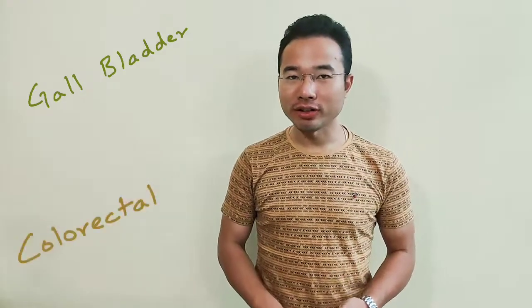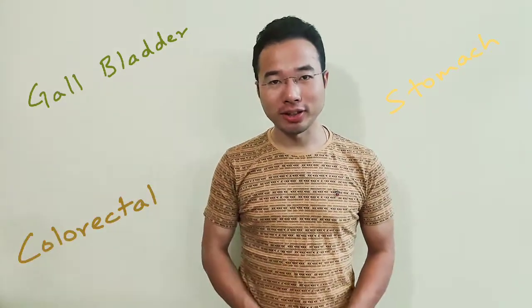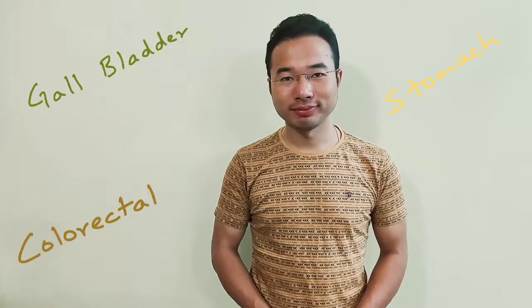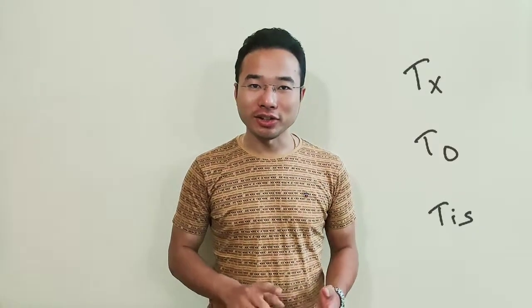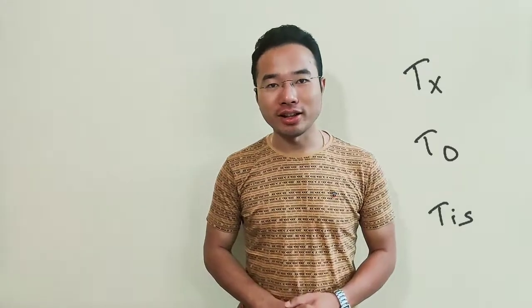In this video we're going to look at the TNM classification of three organs in the abdomen: the gallbladder, the colon and the rectum together, and the stomach. The first three T stages seen in all these three abdominal cancers are TX, T0, and TIS.